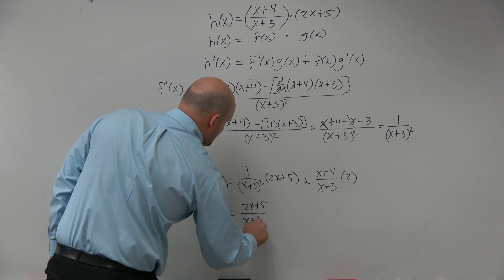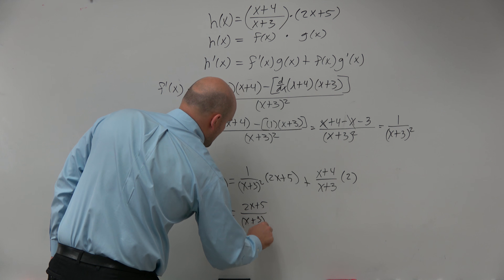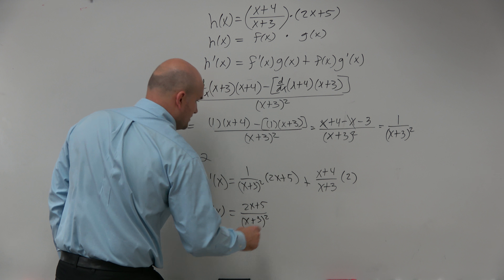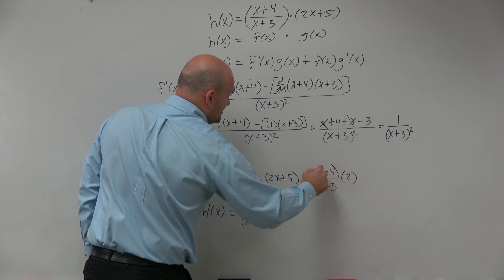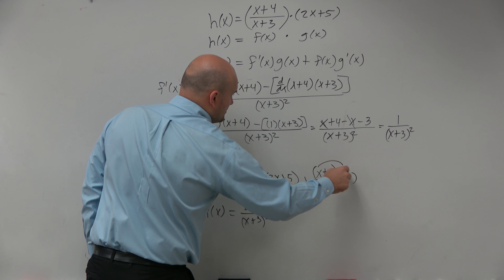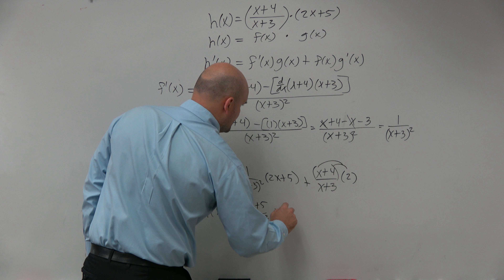We could continue simplifying a bit more. When you multiply this out, you get 2x plus 5 over x plus 3 squared. Plus, distributing the 2, we get 2x plus 8 over x plus 3.